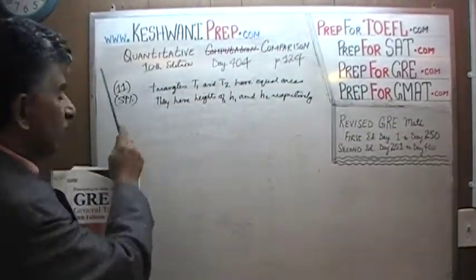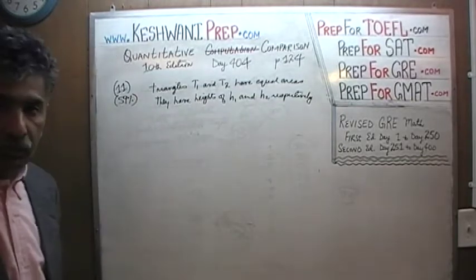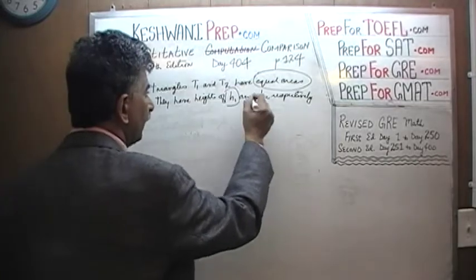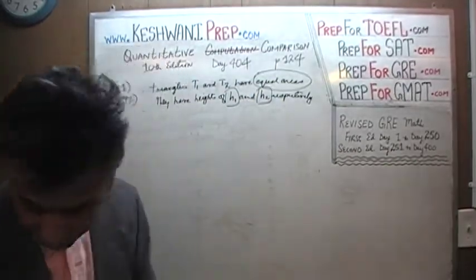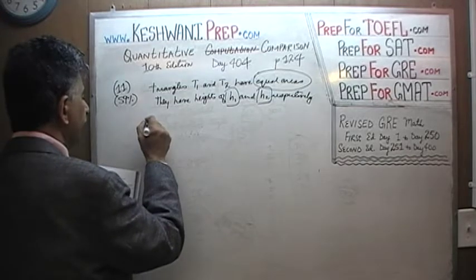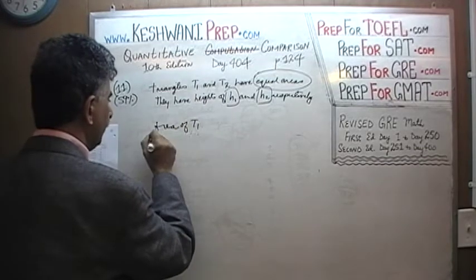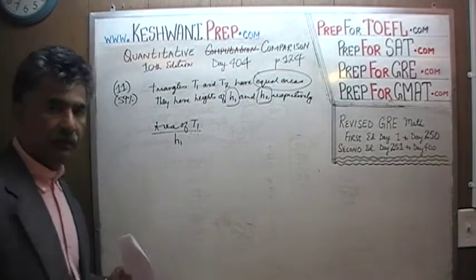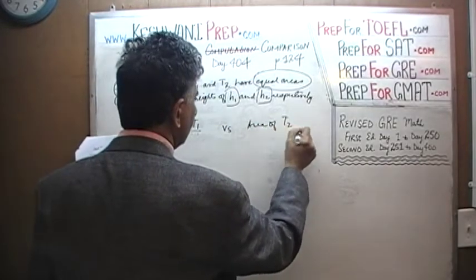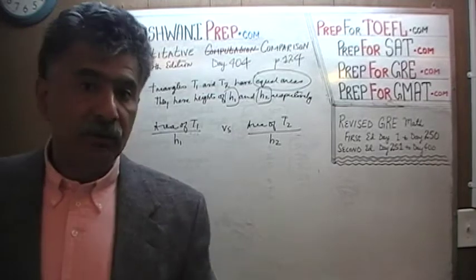We are on page number 124, problem number 11. We are told that we have two triangles, triangle T1 and T2, and that they have equal areas. Triangle T1 has the height H1, and triangle T2 has the height H2. In column number one, we are asked to compare the area of T1 over the height of T1 — the ratio of area to height — versus the area of T2 over its height. So essentially we are being asked to compare the ratio of area to height for the two triangles.